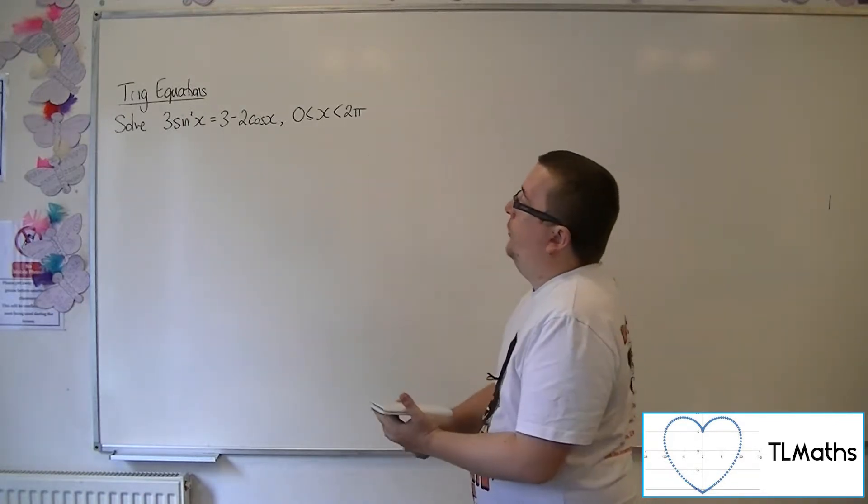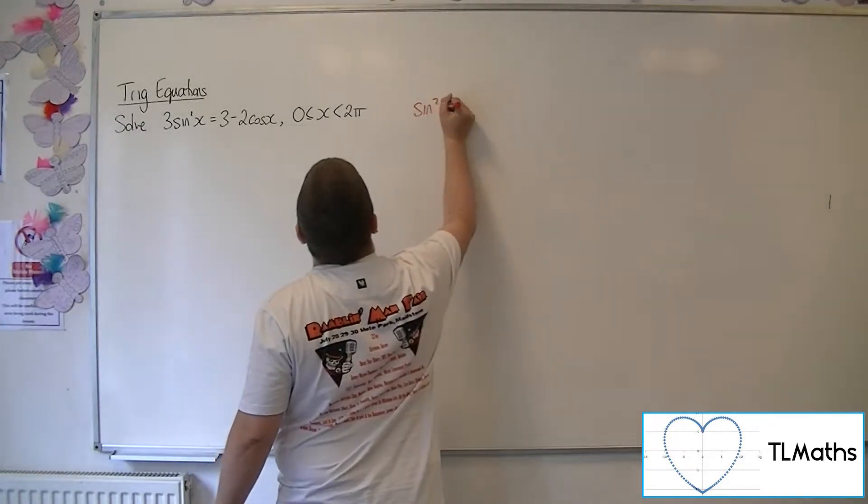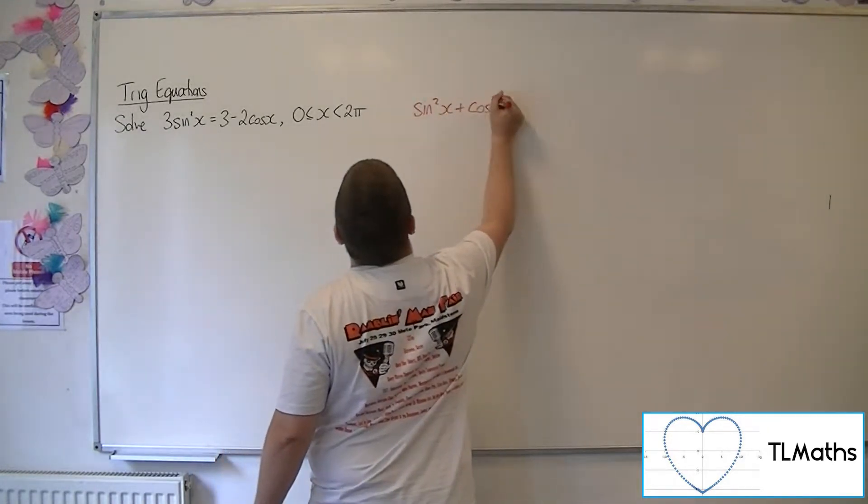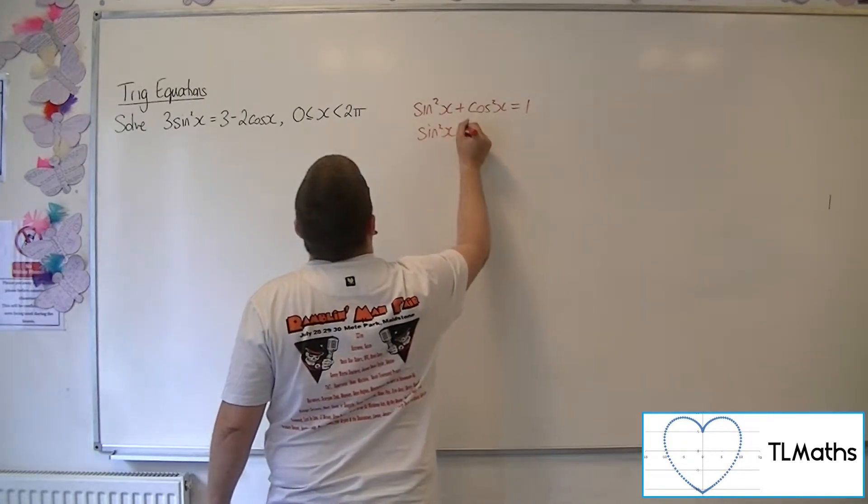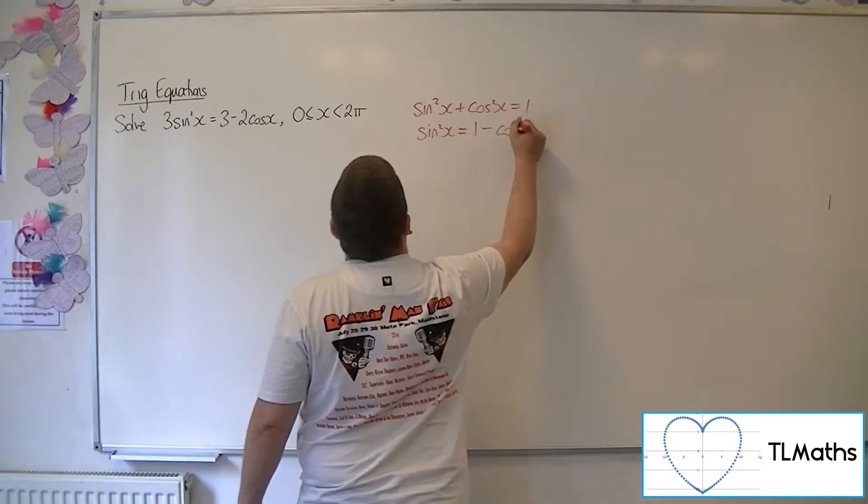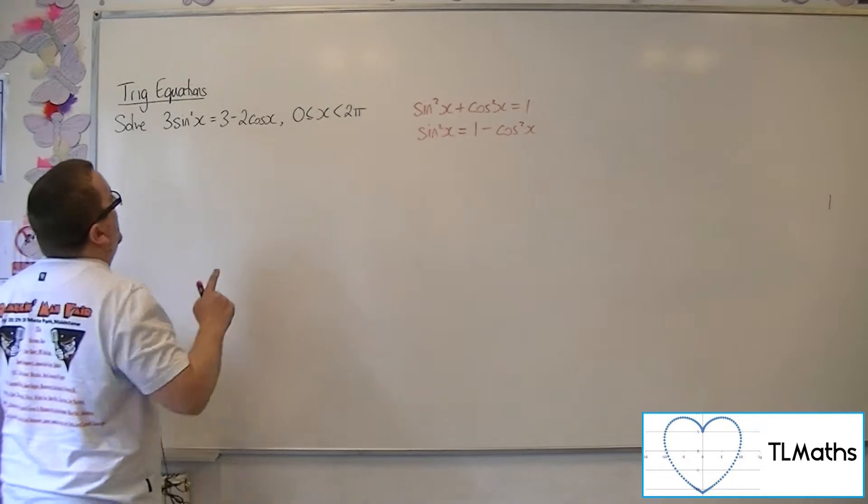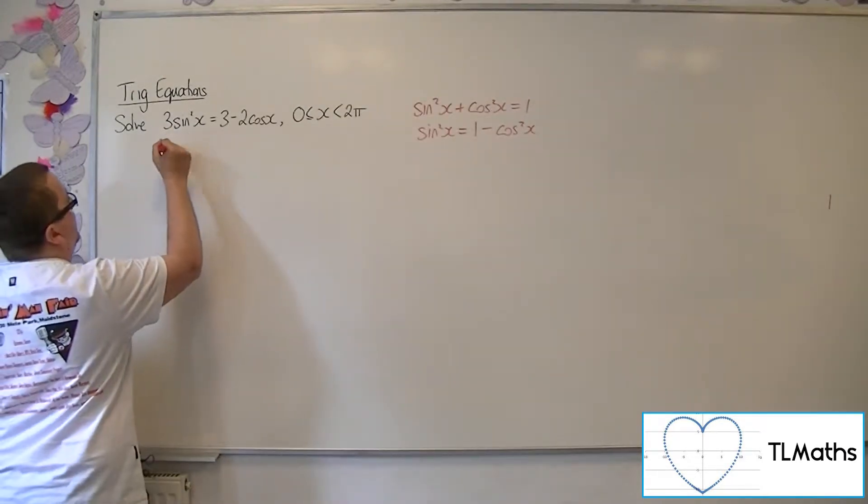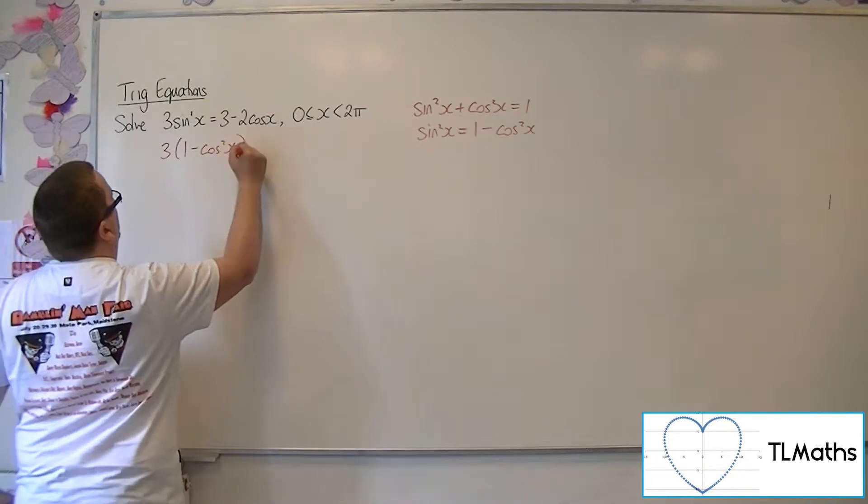Because we've got that sine squared in the equation, it makes sense to look at sine squared plus cos squared is 1, which you can then rearrange to get sine squared by itself so that sine squared is 1 minus cosine squared. So you can replace the sine squared in the equation with 1 minus cosine squared.